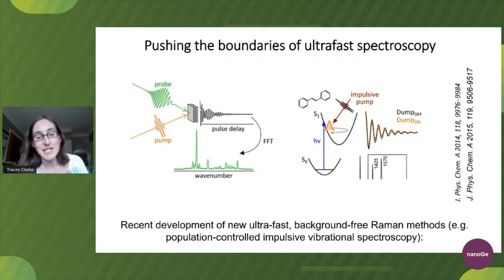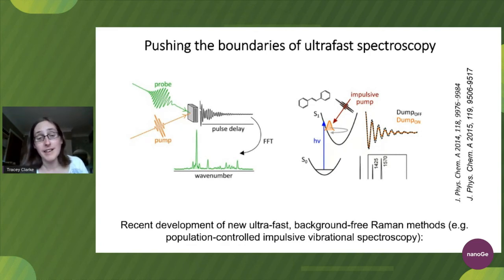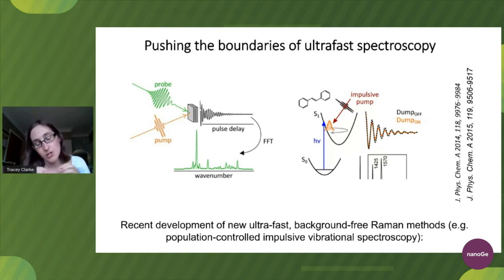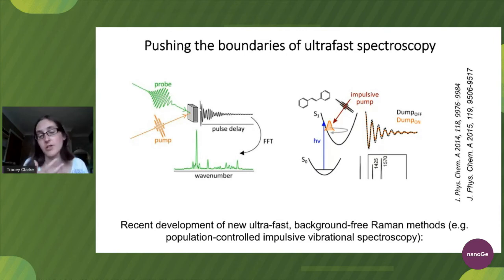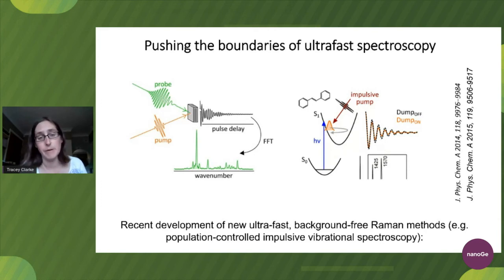Ultra-fast spectroscopy has been pushing the boundaries in the last few years and going in directions that have never previously been possible. One that has recently captured my imagination is population-controlled impulsive vibrational spectroscopy, which enables us to look at background-free Raman spectroscopy of ultra-fast-generated excited states. This is being looked at by Philip Kukura's group in Oxford and the Tahara group in Japan. Essentially, what this enables us to do is give us the holy grail of both structural information and dynamic information simultaneously, enabling us to look even deeper into organic solar cell materials than has previously been possible.